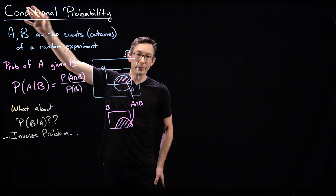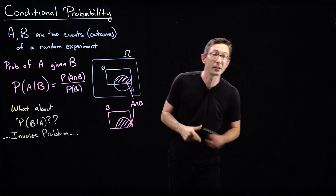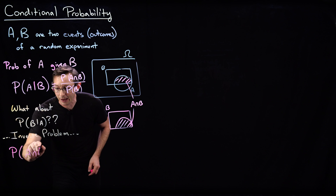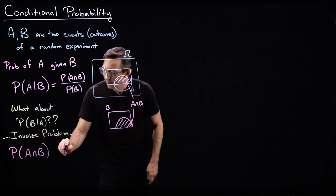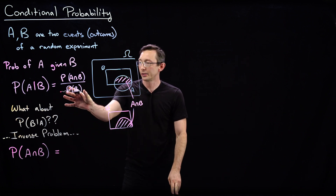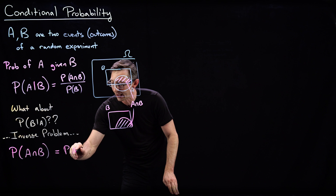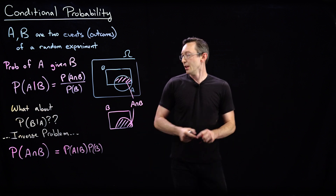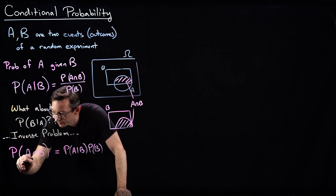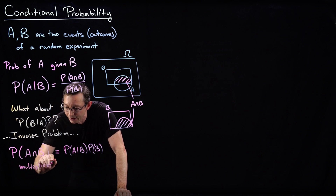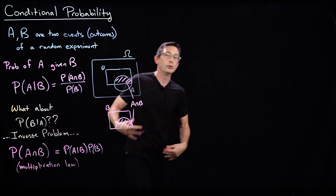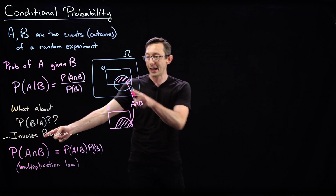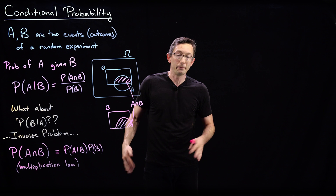There's an important corollary of conditional probability that's really useful. The first corollary is that the probability of A and B happening is equal to the probability of A given B times the probability of B. That's it. This is called the multiplication law. It's so simple but it's going to be really, really useful. We're going to use it all the time, and it's an outfall of conditional probability.